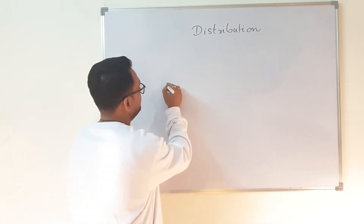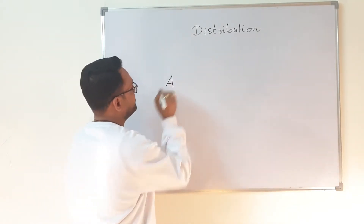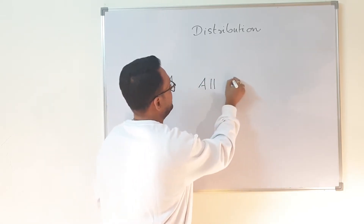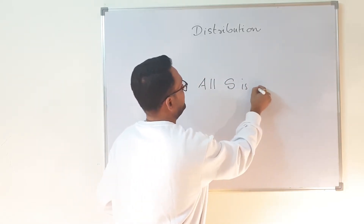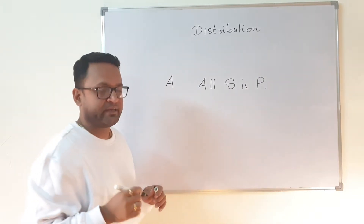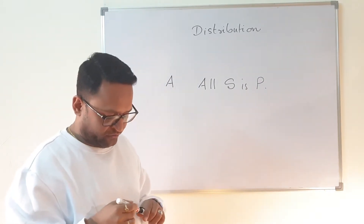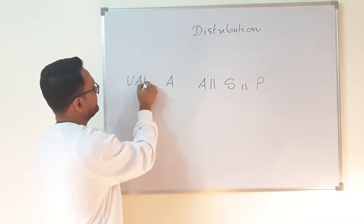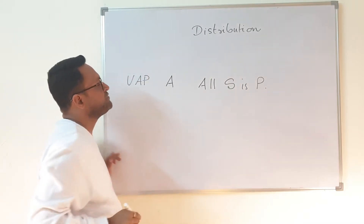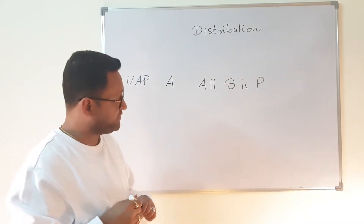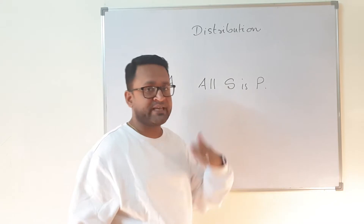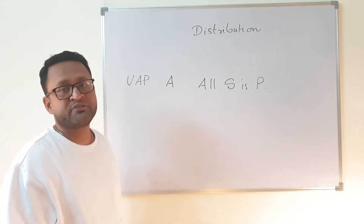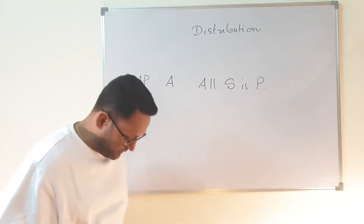Let us take a proposition of the type 'All S is P'. We know that A, or universal affirmative proposition, is basically a universal affirmative proposition of the type 'All S is P'. So when we say 'All S is P', whether the term S is distributed and whether the term P is distributed.